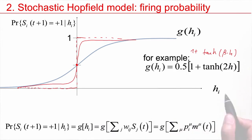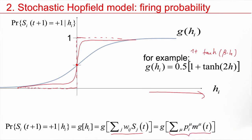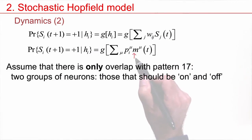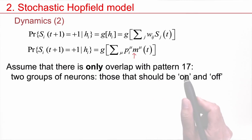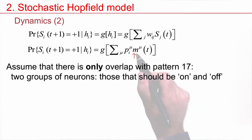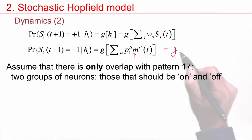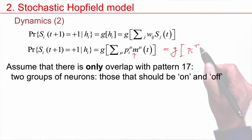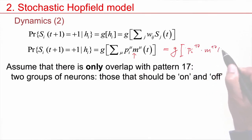The total input is h — this is the axis representing the total input, which is the sum over all neurons. Since the weights are the same as before and the state of the neuron is still plus or minus 1, I can still define my overlaps as before and get the same equation. The only thing that has changed is the output. Now assume there is only overlap with pattern number 17. That means the overlap with all other patterns is 0, and therefore I would have g of the sum, which reduces to PI_17 times M_17 of T.